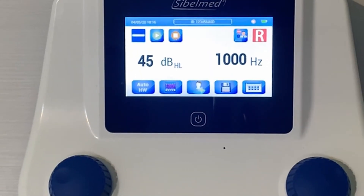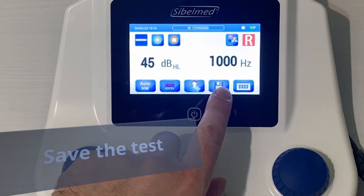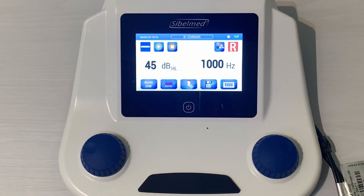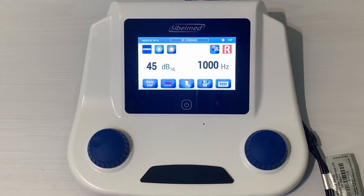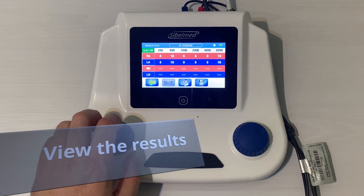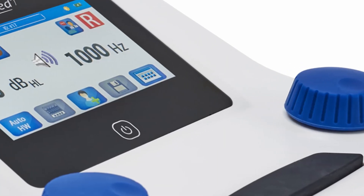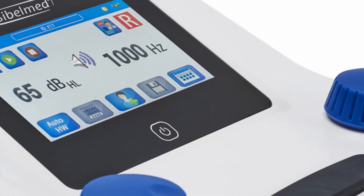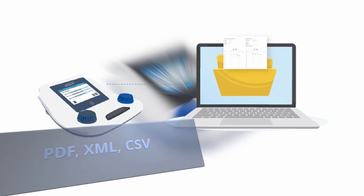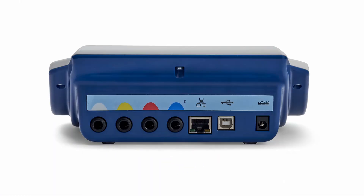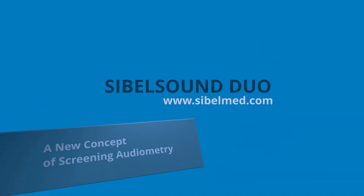Press this icon to save the test. This icon will be used to display the saved thresholds and diagnoses. If the data export option is available and automatic export is on, the files will be automatically sent to your network. Sybil Sound Duo — a new concept of screening audiometry.